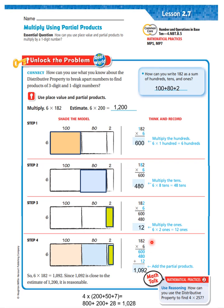6 times 2 is 12. 600 plus 480 plus 12. So, 182 times 6 equals 600 plus 480 plus 12. That equals 1,092. And since 1,092 is close to the estimate of 1,200, it is reasonable.